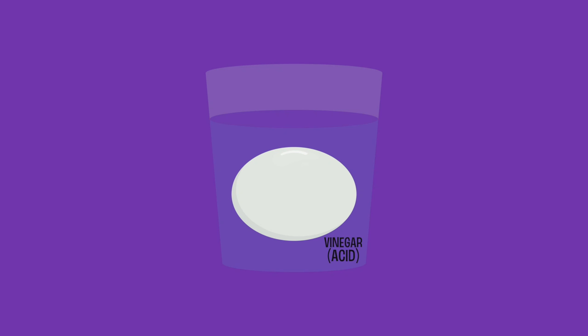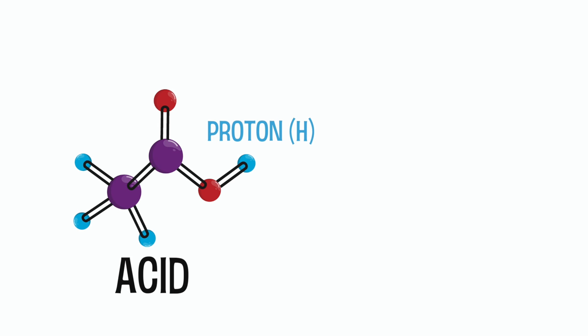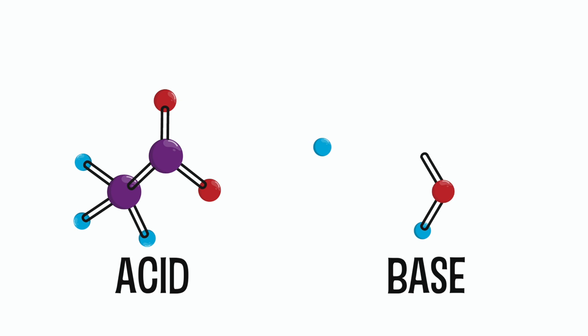This is a classic acid-base reaction where an acid, in this case vinegar, reacts with a base, in this case calcium carbonate, or the shell of the egg. Acids are molecules that give up a proton. A base grabs that proton. In this experiment,